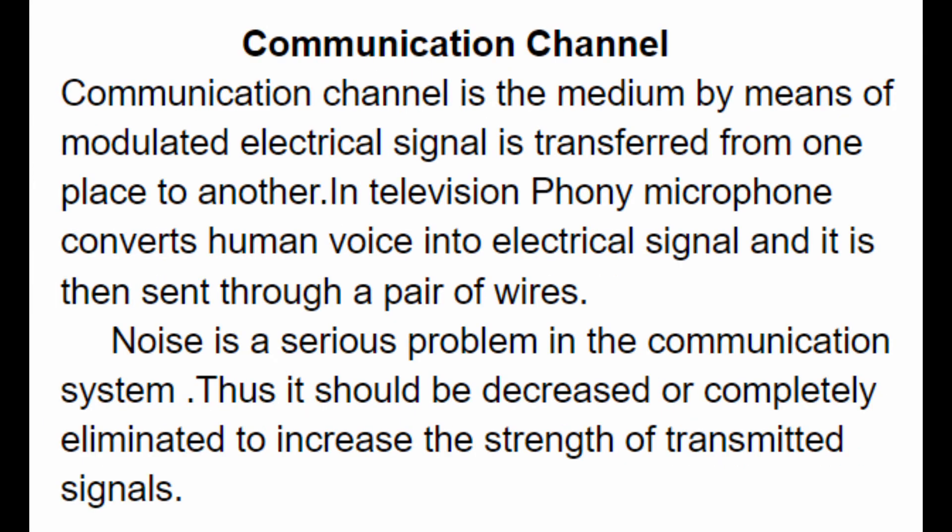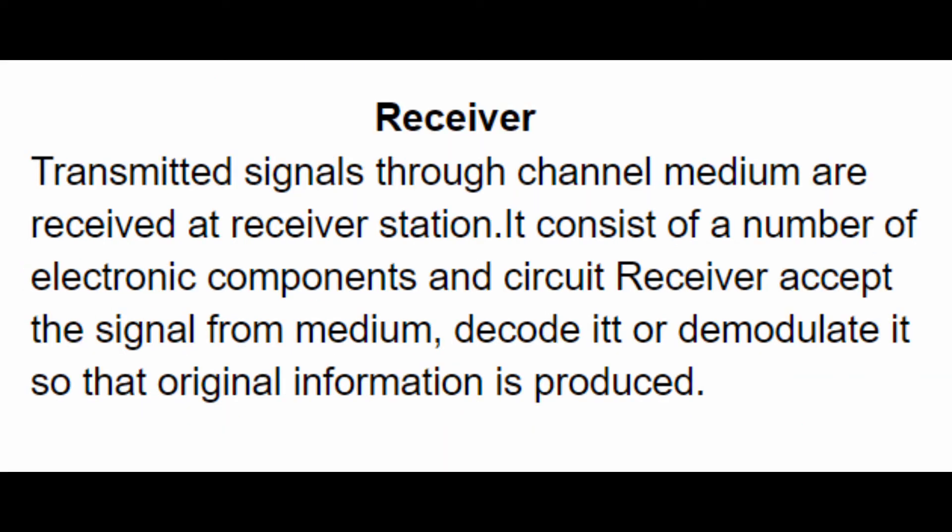The communication channel is the medium by which modulated electrical signals are transferred from one place to another. In television, a phony microphone converts human voice into electrical signals and it is then sent through a pair of wires. Noise is a serious problem in communication systems. Thus it should be decreased or completely eliminated to increase the strength of transmitted signals. Transmitted signals through the channel medium are then received at the receiver station. The receiver consists of a number of electronic components and circuits.